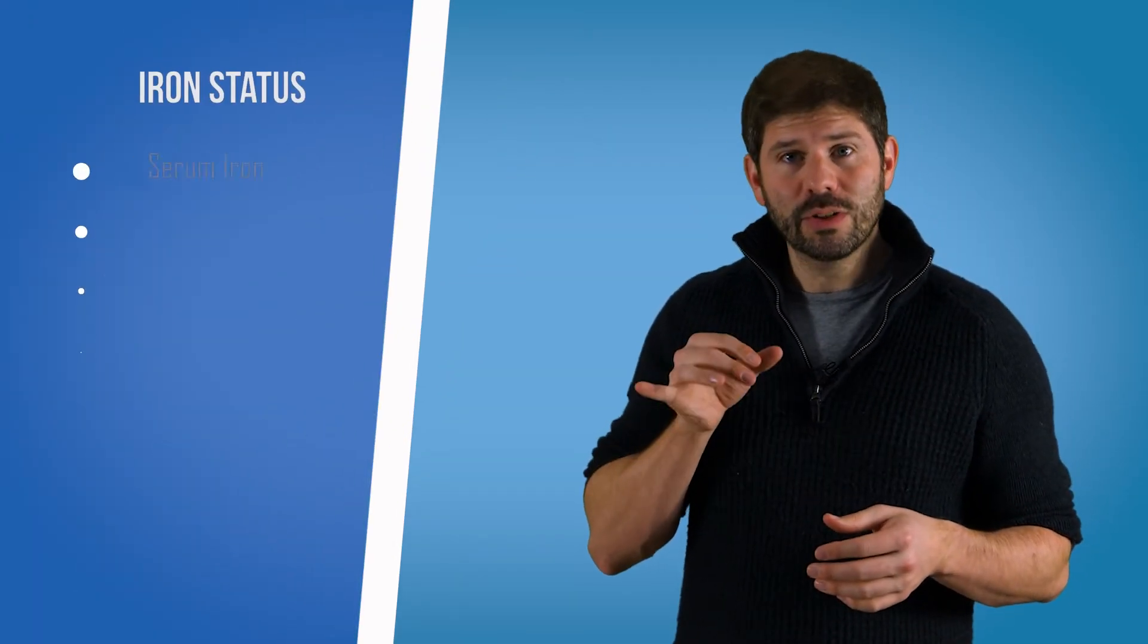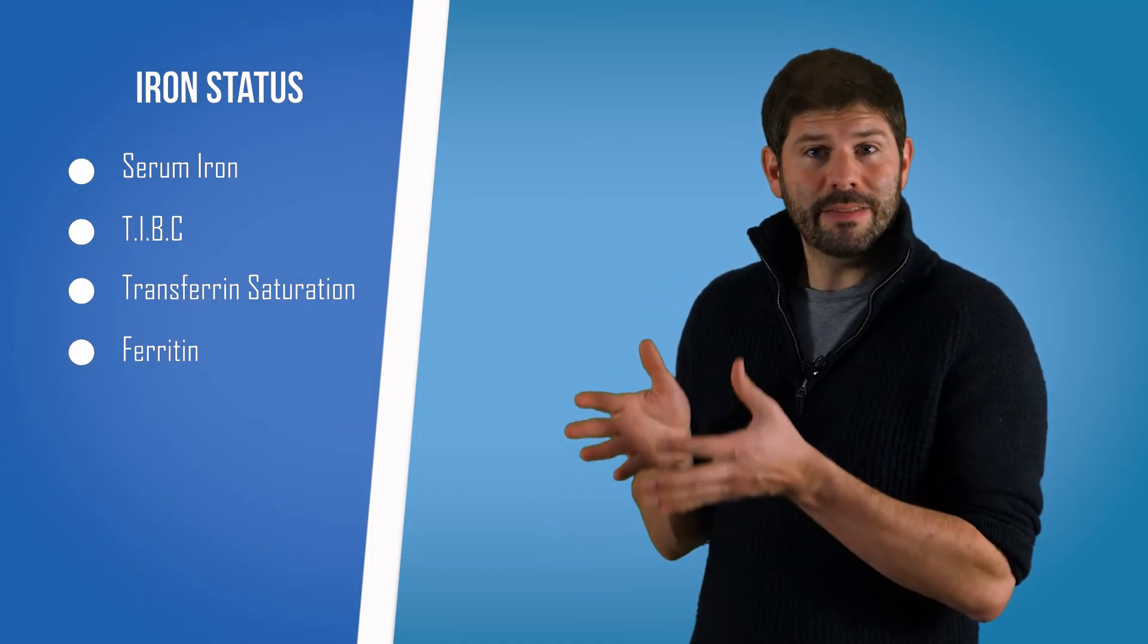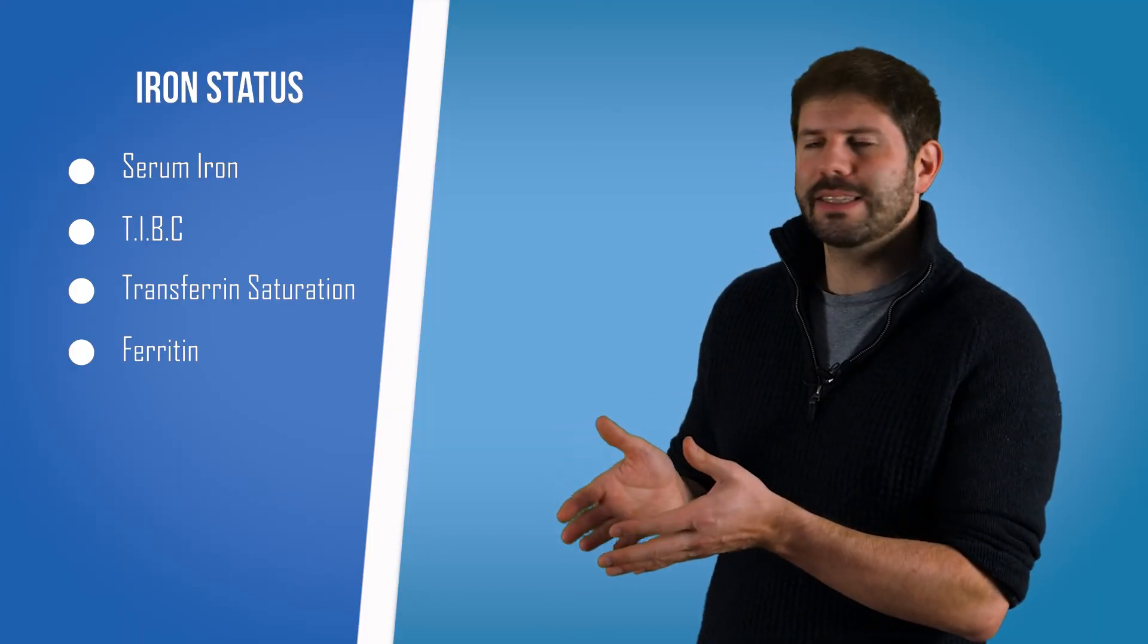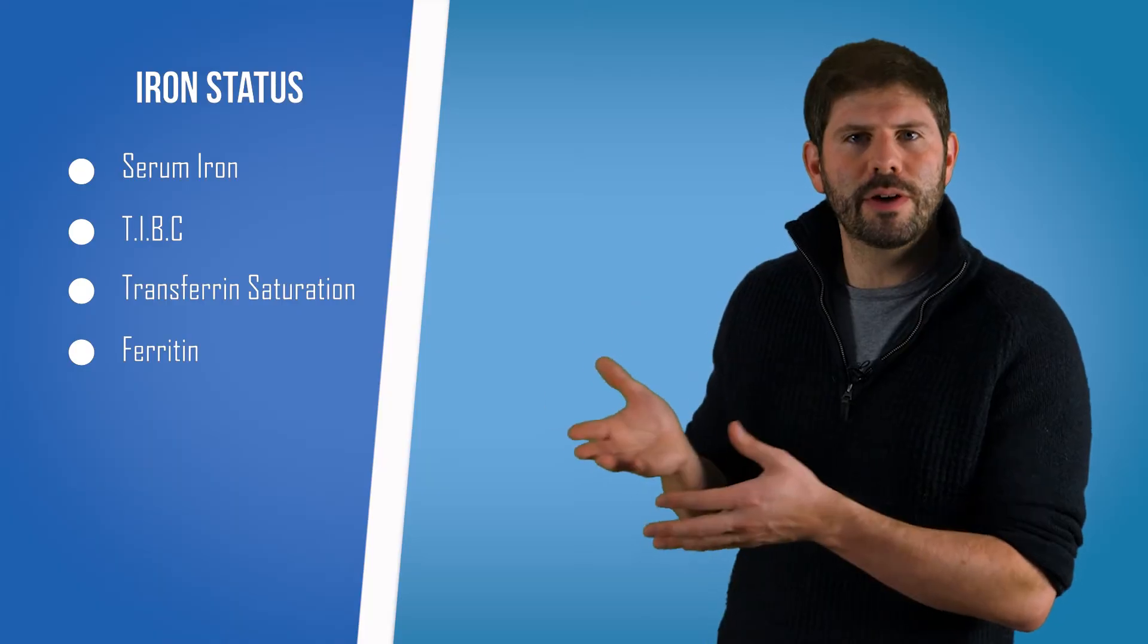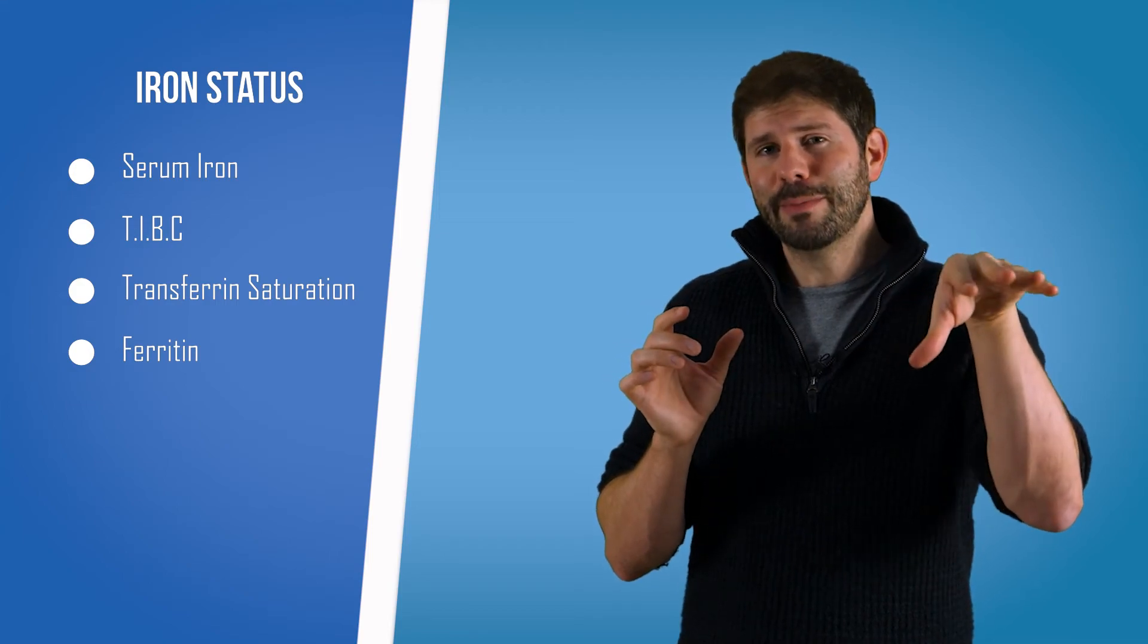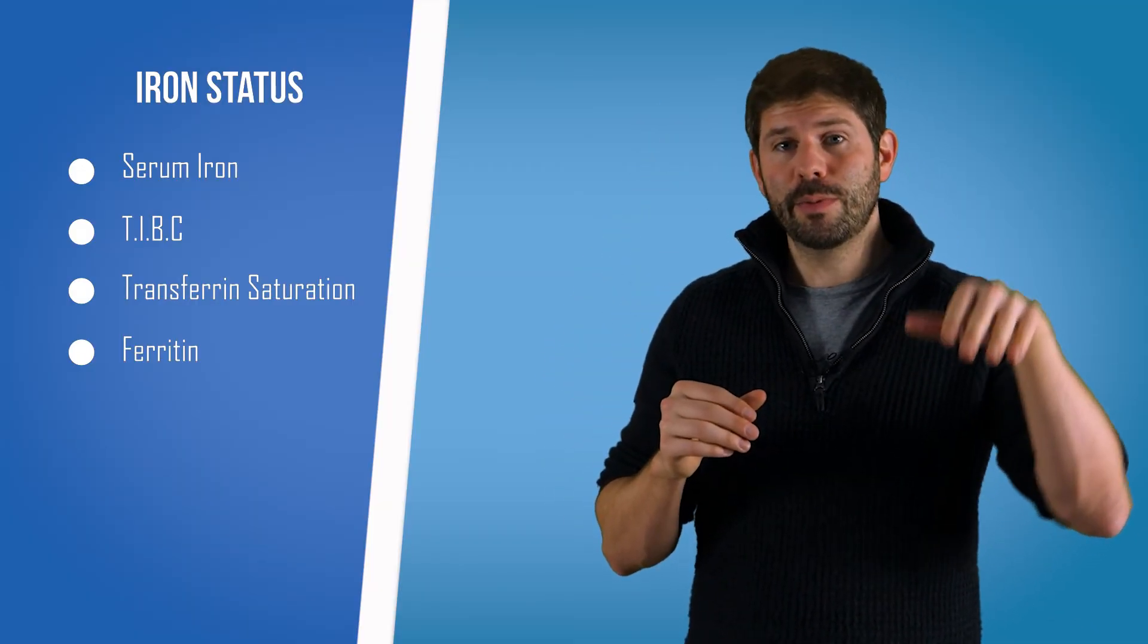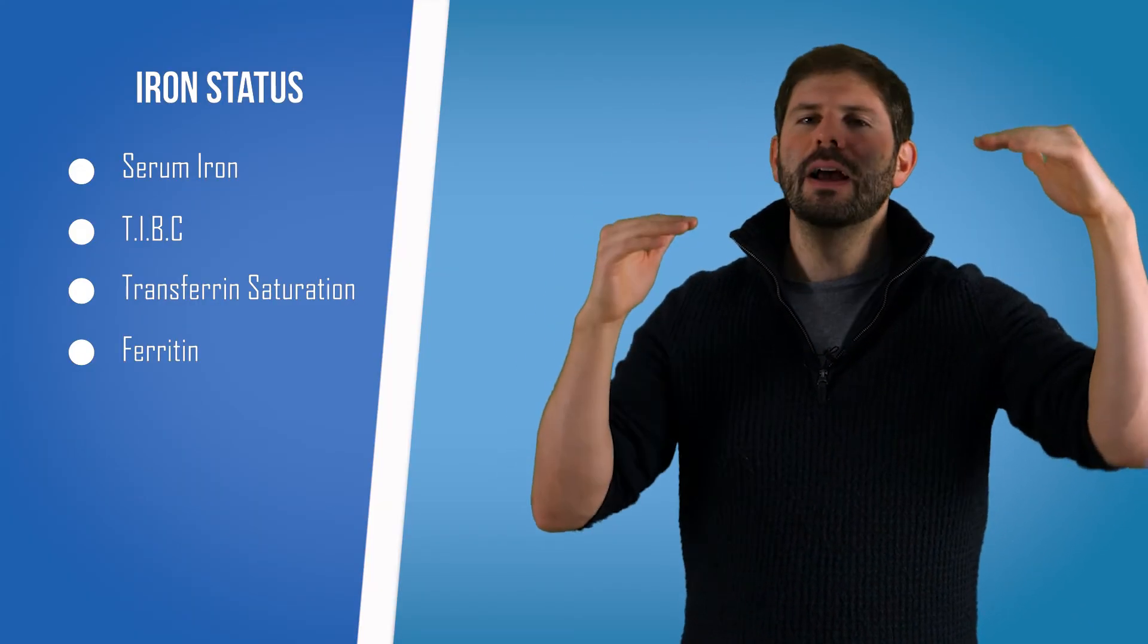Now it's worth noting that ferritin, as well as being a fantastic measure of iron stores, is also an inflammatory marker. Now if you saw our inflammatory marker video, you'll know that if you have an infection or inflammation, certain molecules in your body shoot up as your body mounts a response. Ferritin is one of those molecules as well, so if you have an infection or inflammation, then your iron ferritin level becomes a little bit unreliable because the ferritin will also have gone up because of infection or inflammation. Now we validate this by looking at it alongside one of the other inflammatory markers, and if your other inflammatory markers are normal, well, your ferritin is probably going to be a good measure of iron stores. If your inflammatory markers are high and your ferritin level is high, it becomes less reliable.